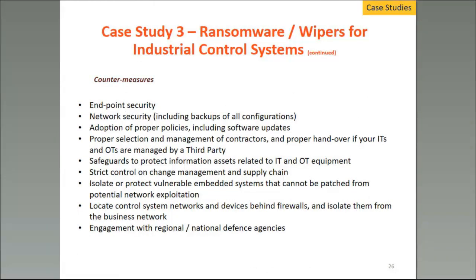What are the countermeasures? First, endpoint security is one good suggestion. Second, network security, including backups of work configurations that you have on your own network. The adoption of proper policies for software updates is a very good protection. In addition, proper selection and management of contractors — try to have safeguards to protect information related to your IT and OT equipment, as sometimes this is not done at all. Tight control on change management and supply chain is another big point, and this will most probably be in most legislation in the future. Isolate and protect vulnerable embedded systems which cannot be patched from potential network exploitation. And finally, engagement with regional and national defense agencies may be an additional point.